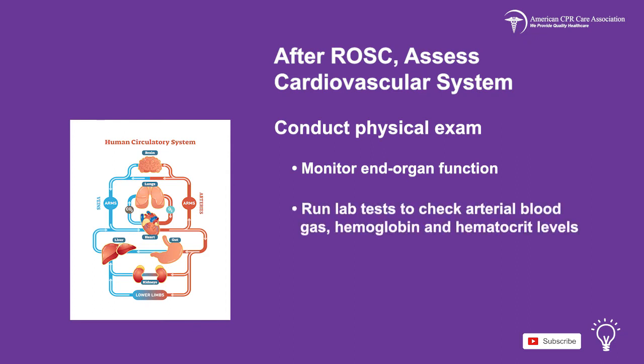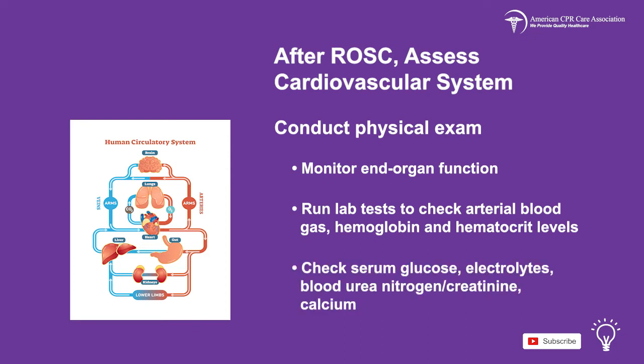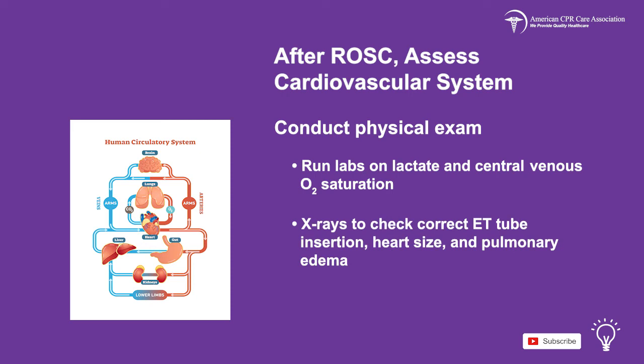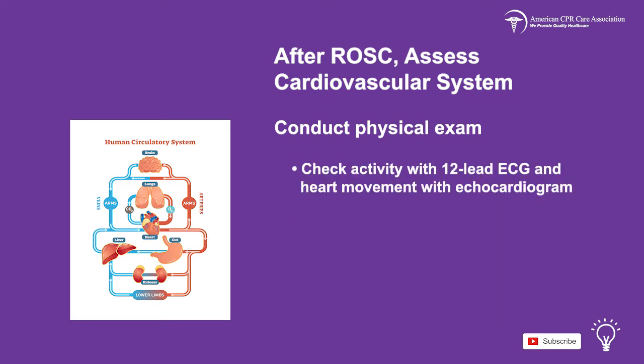Run lab tests to check arterial blood gas, hemoglobin, and hematocrit levels. Also check serum glucose, electrolytes, blood urea nitrogen, creatinine, calcium, lactate, and central venous oxygen saturation. Look at x-rays to check correct ET tube insertion, heart size, and pulmonary edema. Check the child's heart activity with a 12-lead ECG and heart movement with an echocardiogram.